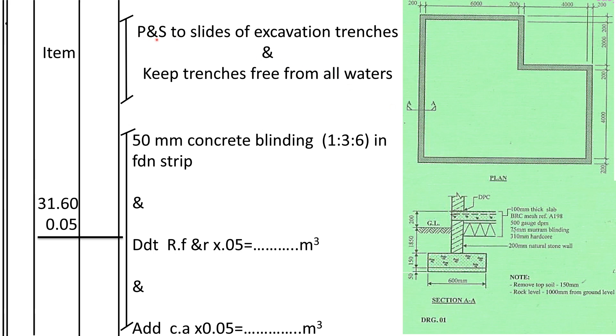So we now shall take off planking and stretching to sides of the excavation trenches and keeping the trenches free from water. We usually do it as an item because we cannot be able to measure it from the drawings. In other countries they measure it from the drawings whereby you find the area of the formwork all around, but in our country using the SMM we just write item whereby when you write item in the BQ we'll just provide a provisional sum for that work.